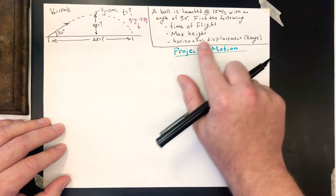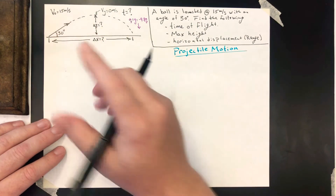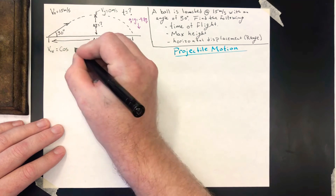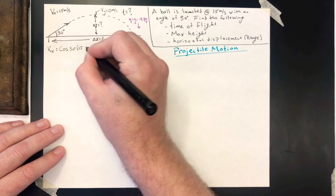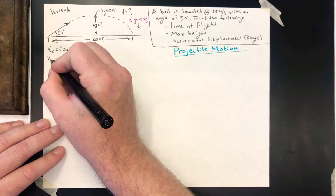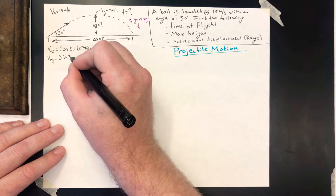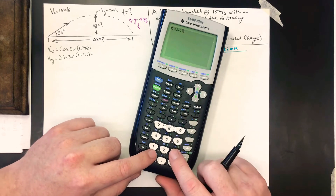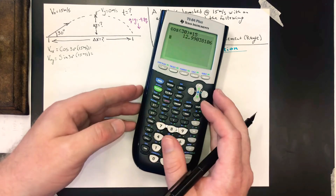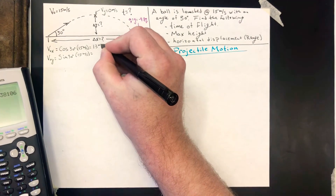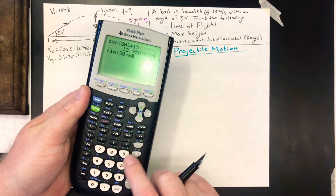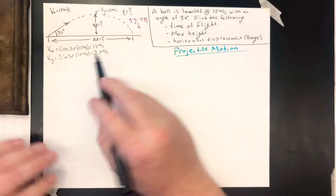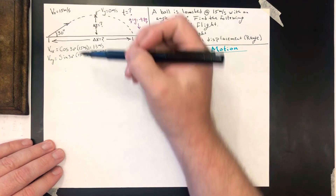The first thing I usually do before trying to figure things out is take the initial velocity and break it into x and y components. The initial velocity in the x is cosine of 30 degrees times 15 meters per second. The initial velocity in the y is sine of 30 degrees times 15 meters per second. Cosine of 30 times 15 gives us 12.99, which we'll call 13. Sine of 30 times 15 gives us 7.5. So our initial velocities are 13 m/s horizontally and 7.5 m/s vertically.